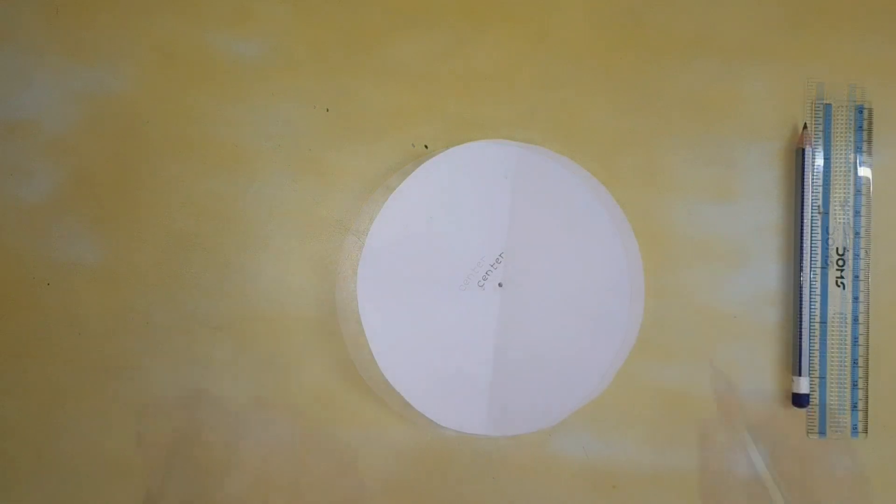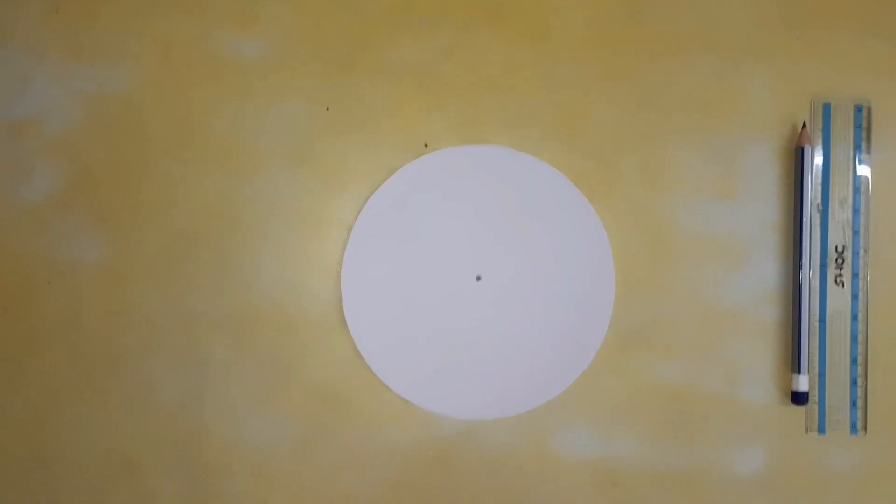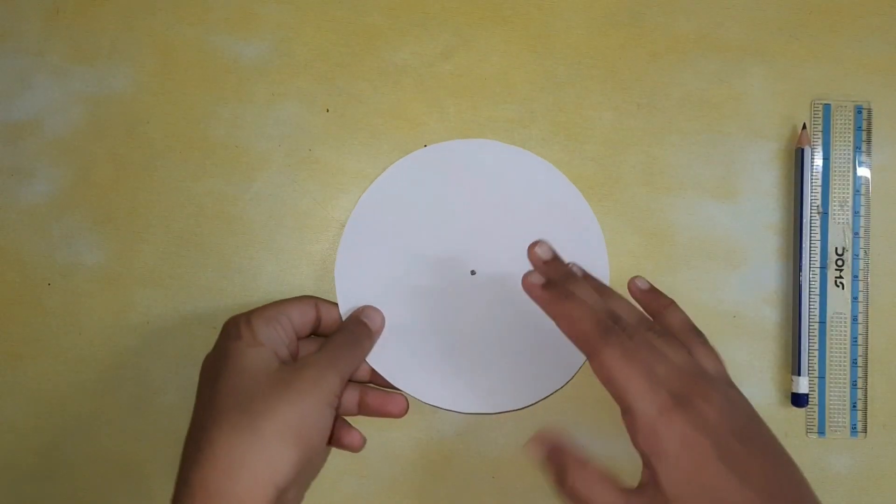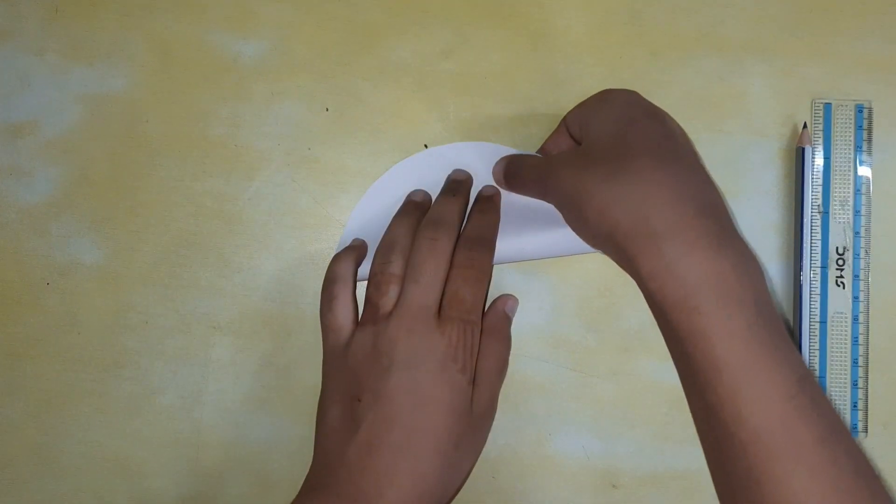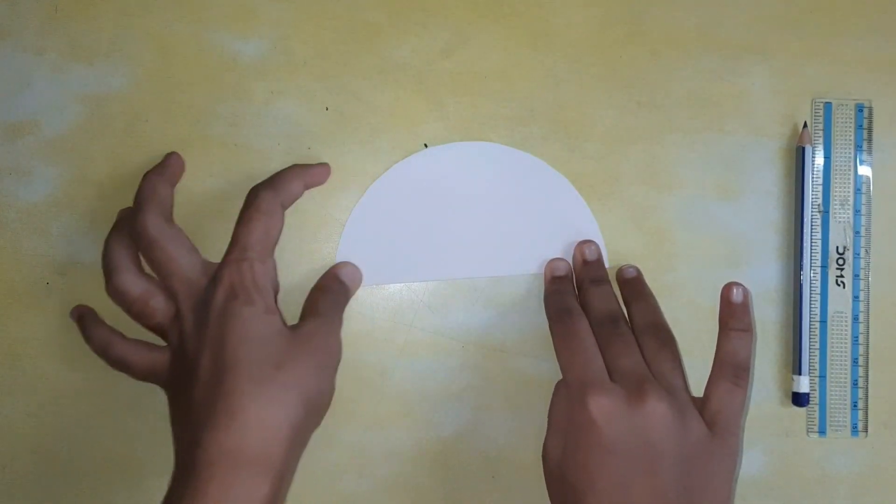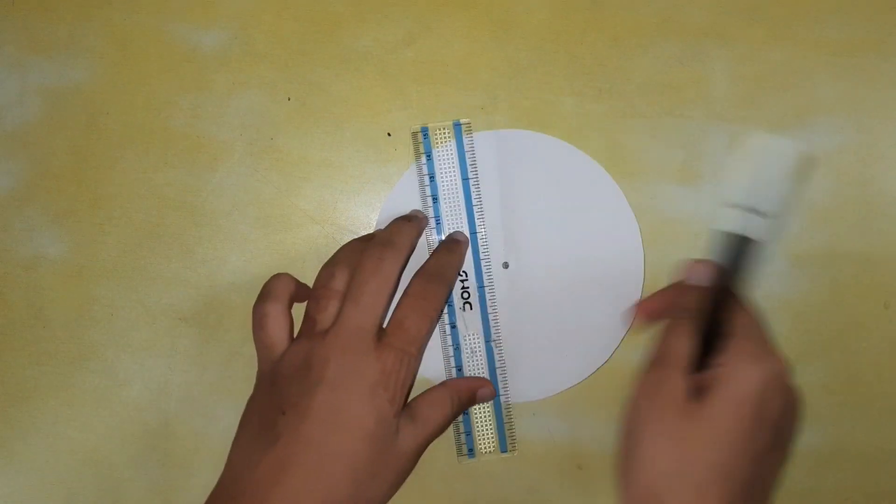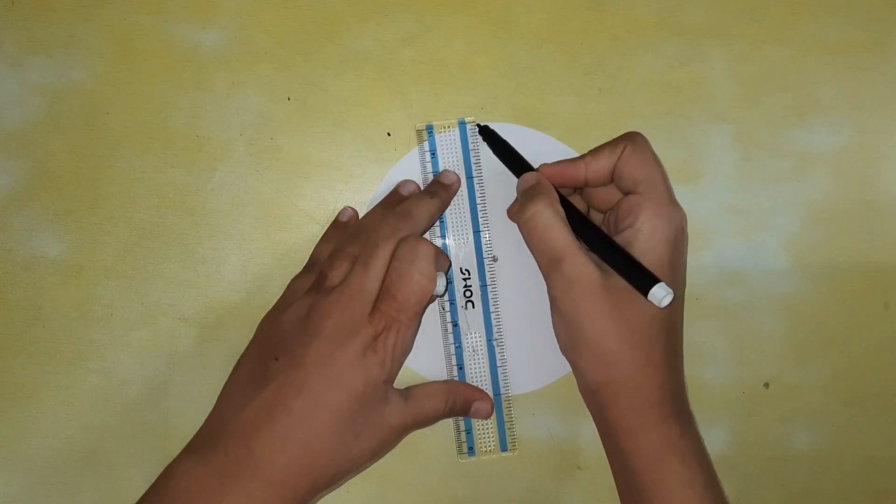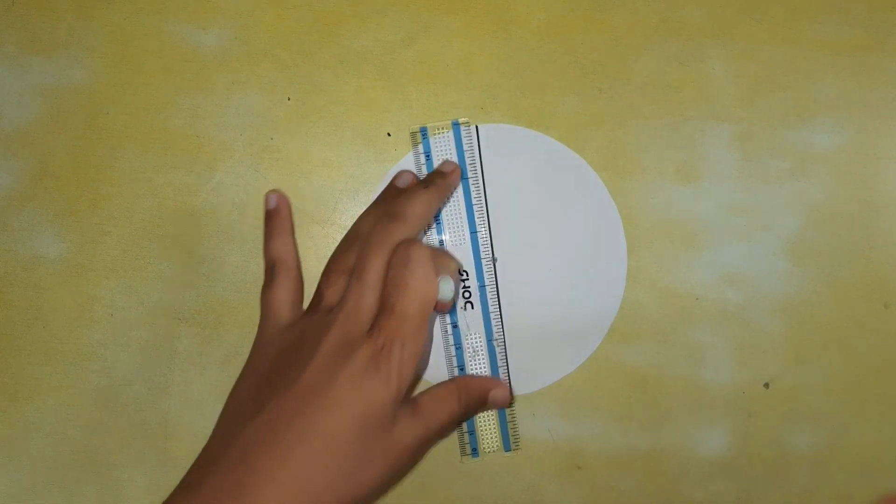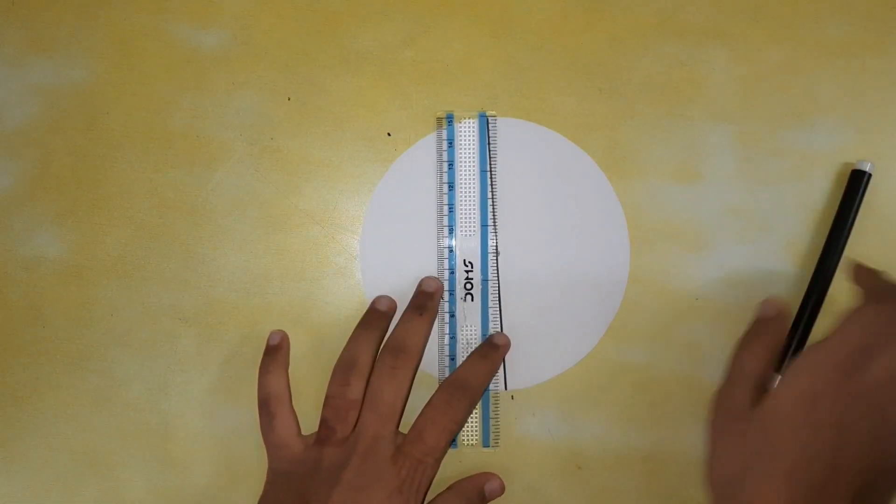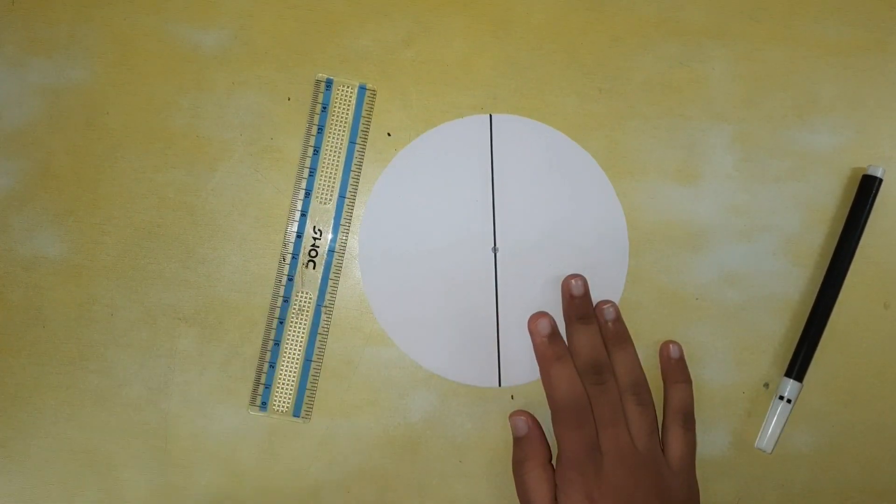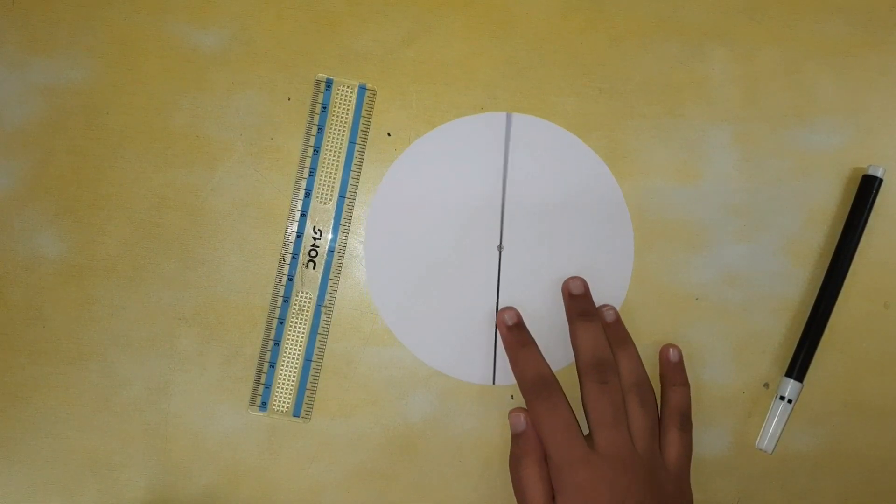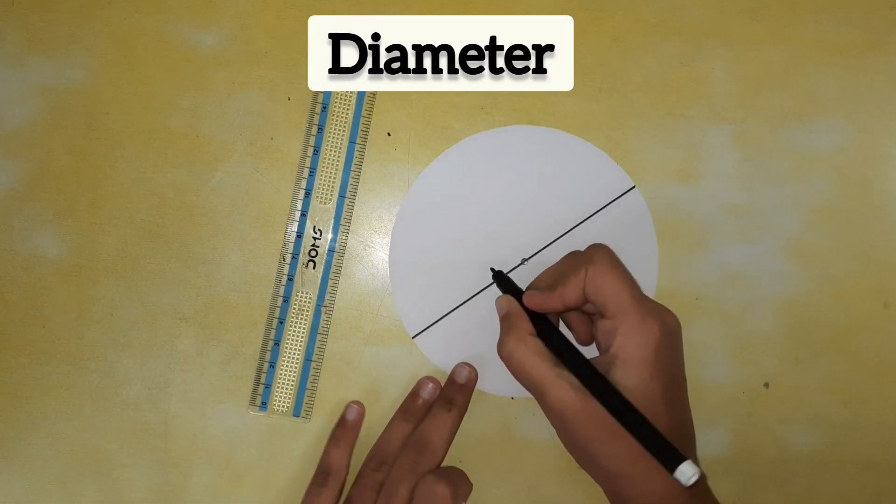Now let's take another circle with a center point and let's fold it into half and trace it. Now children, did you notice this line passes through the center point? This is known as a diameter.